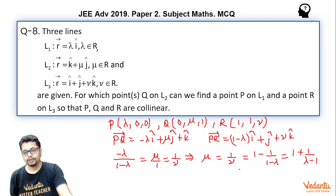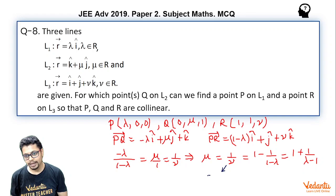Now if you see carefully, 1 by nu can take all real values except 0, because 1 by nu will tend to 0 as nu tends to infinity or minus infinity. So it can take all real values except 0.